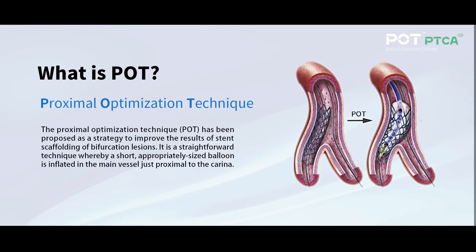What is POT? The proximal optimization technique, POT, has been proposed as a strategy to improve the results of stent scaffolding of bifurcation lesions. It is a straightforward technique whereby a short, appropriately sized balloon is inflated in the main vessel just proximal to the carina.